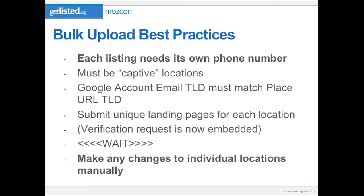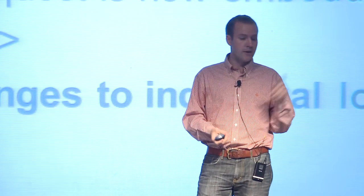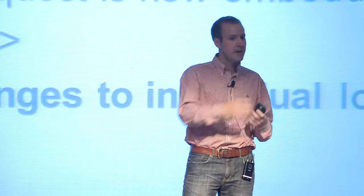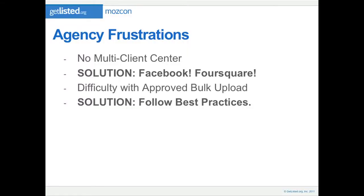It's a best practice — not required — to submit a unique landing page for each location rather than just the home page. The verification request is now embedded in the upload process, which used to be impossible to find. You'll probably have to wait 30 to 45 days before Google approves you, but you absolutely have to go through this verification process — an unverified bulk upload is basically worthless. Once you've got those locations in, make any changes manually on a quarterly or monthly basis. Don't just re-upload things; Google has had trouble overwriting old listings and potentially losing associated reviews.